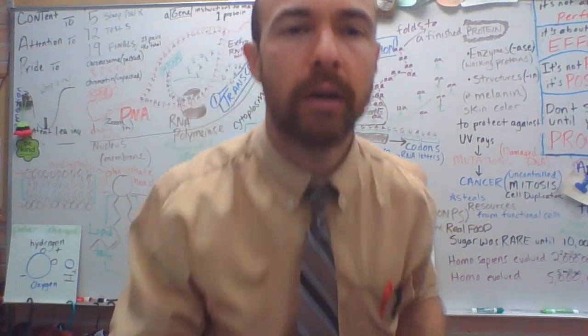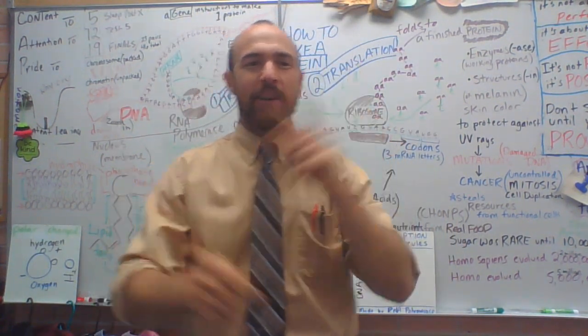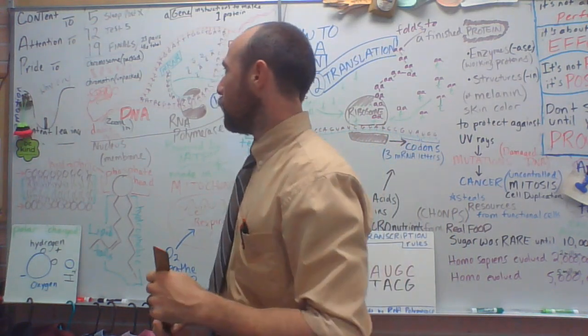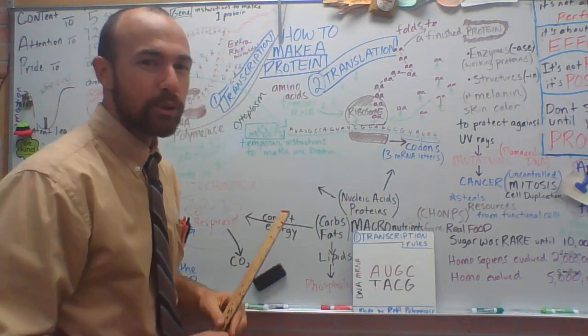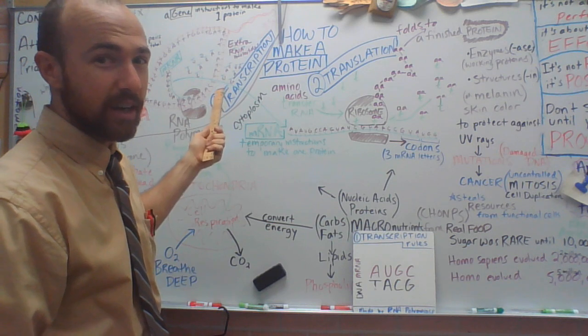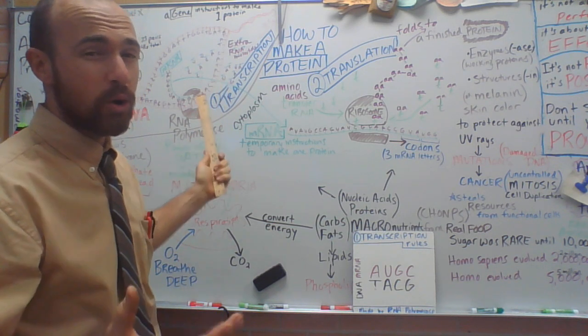Hey yo, is this thing on? Alright, okay. Today, test five, how to make a protein. We are going to start with the instructions to make a protein, which is DNA, which comes in a variety of different forms. Let's go over those forms.